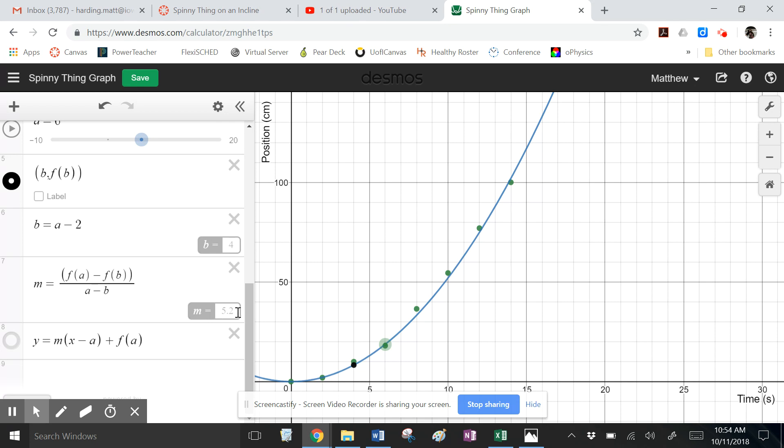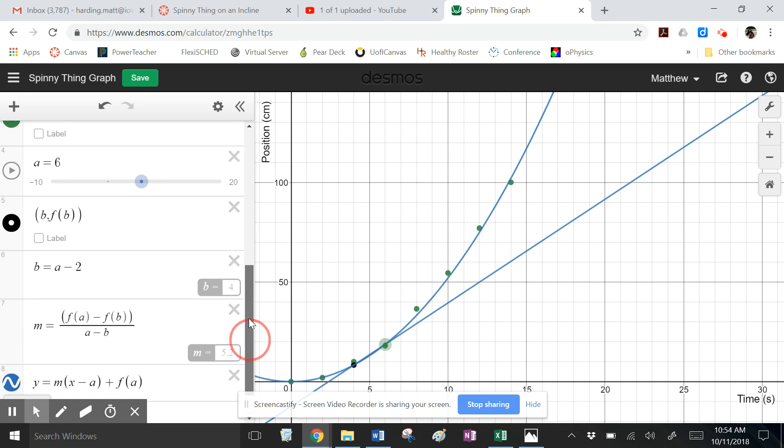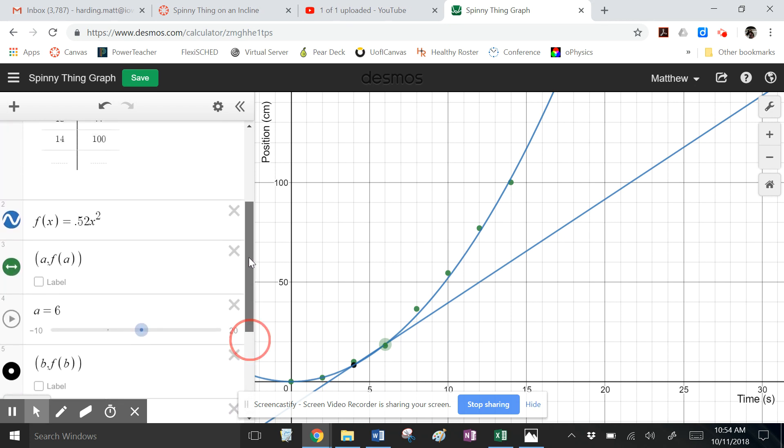And we're dividing that by the change in the horizontal, A minus B. So this is just change in the vertical divided by change in the horizontal. Right here, it's telling me that it has a value of 5.2. And the units on that would be centimeters divided by seconds. And then here's where I'm telling it to draw a line connecting those two points. So take that slope value M, and multiply that by X minus A, and then we're going to add to that F of A.